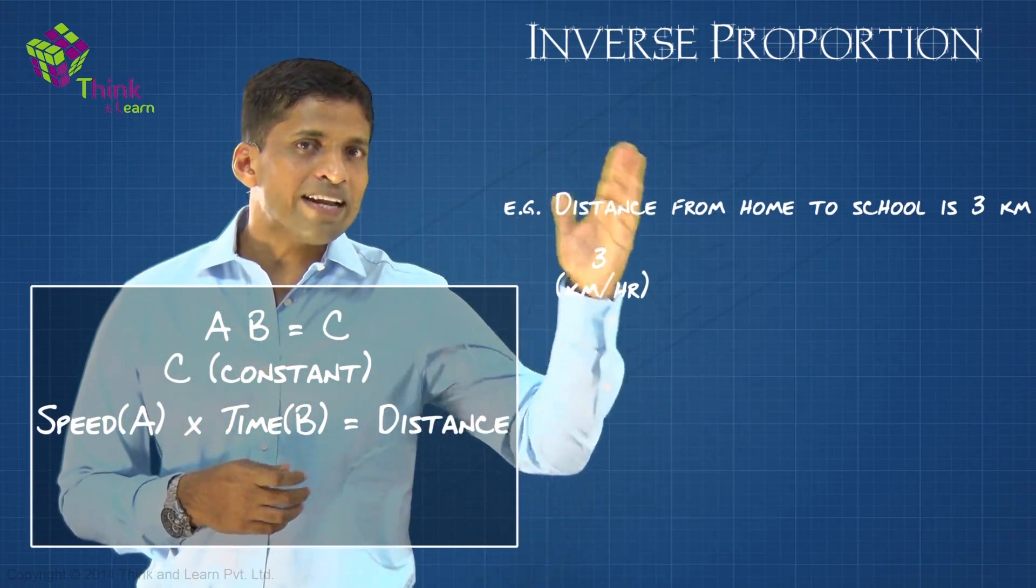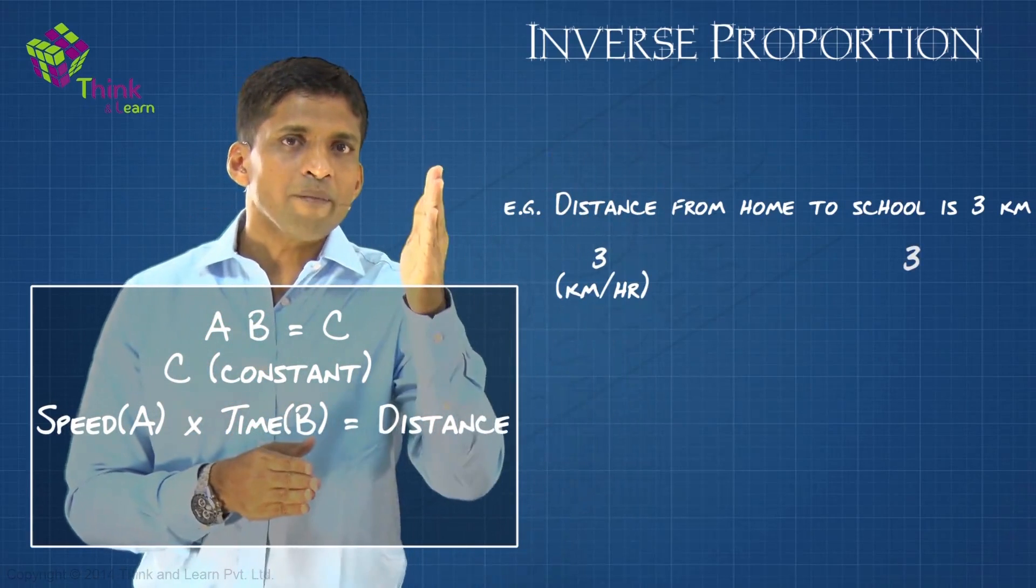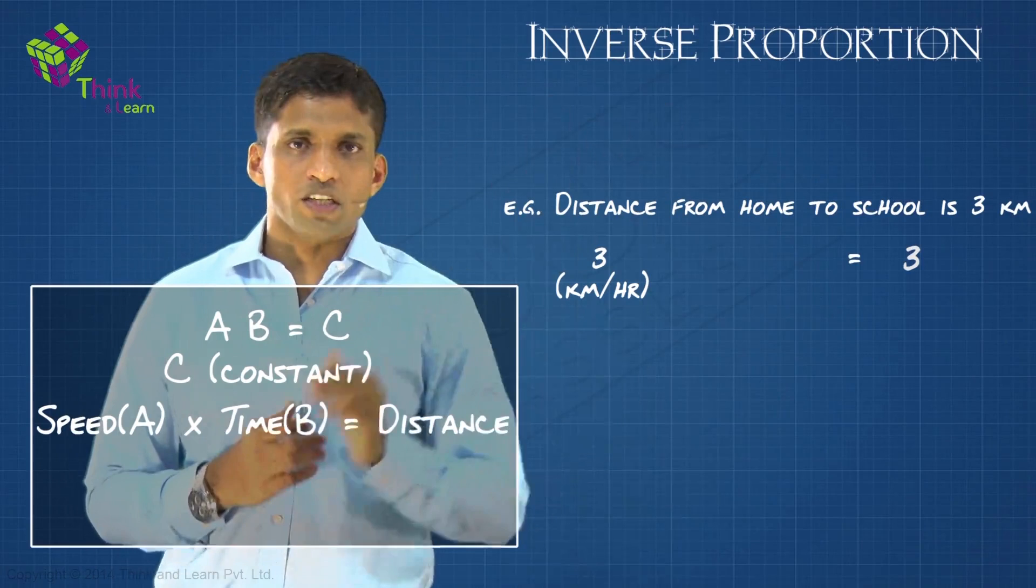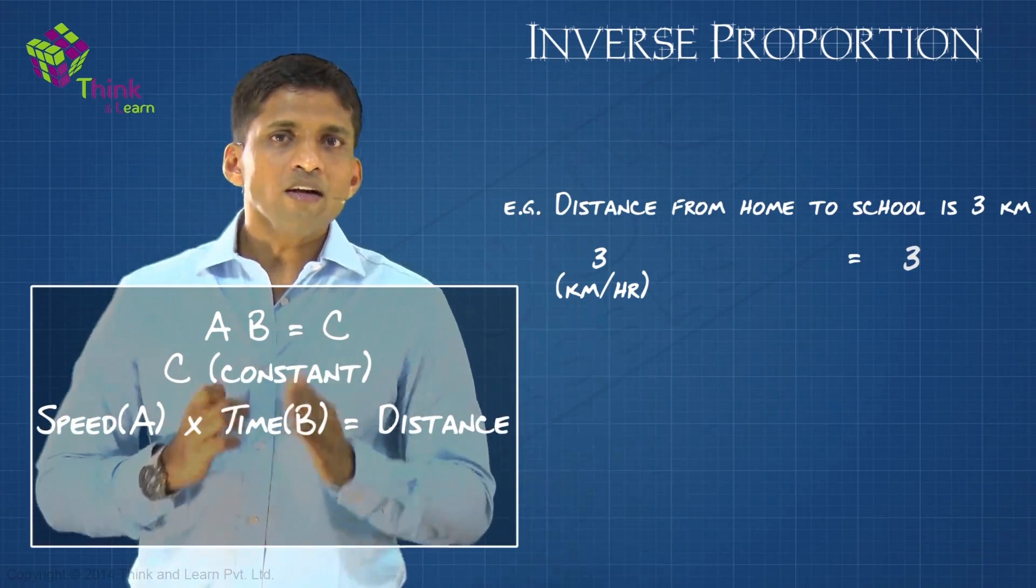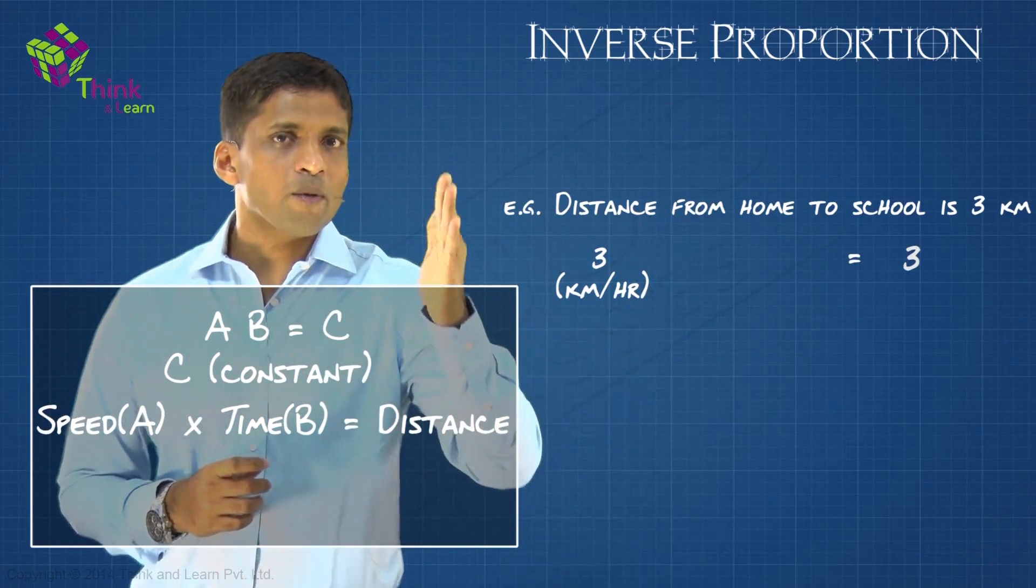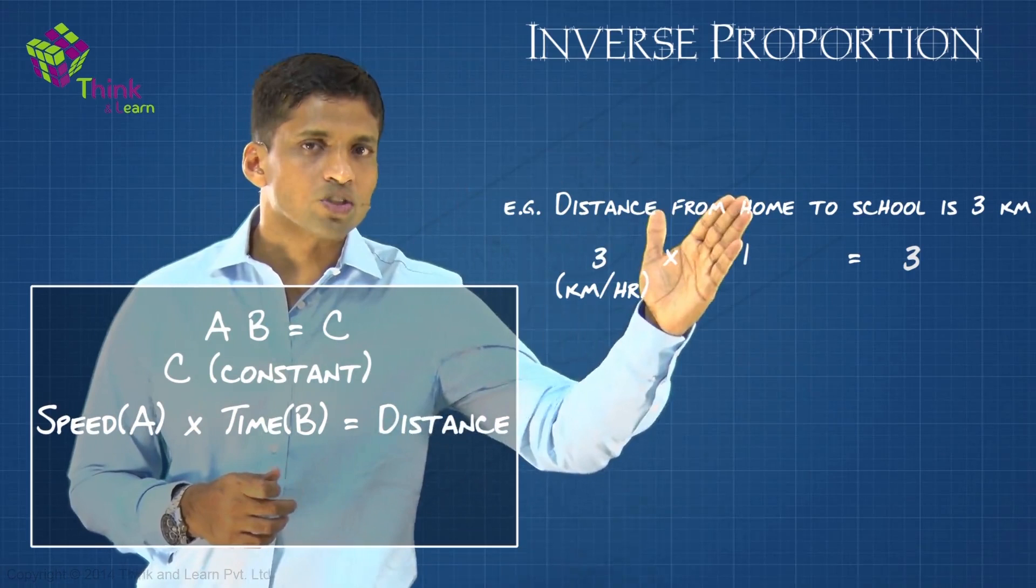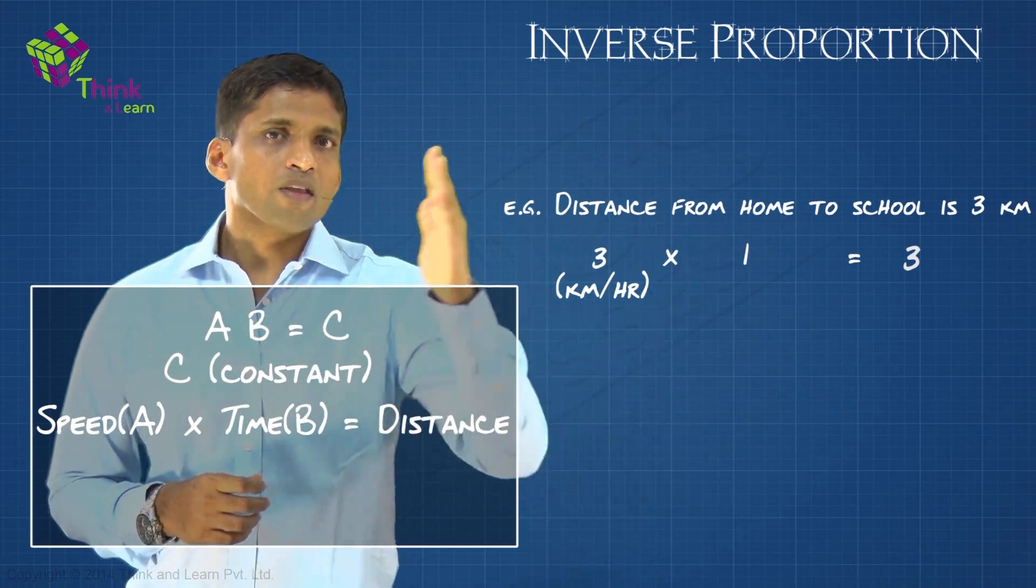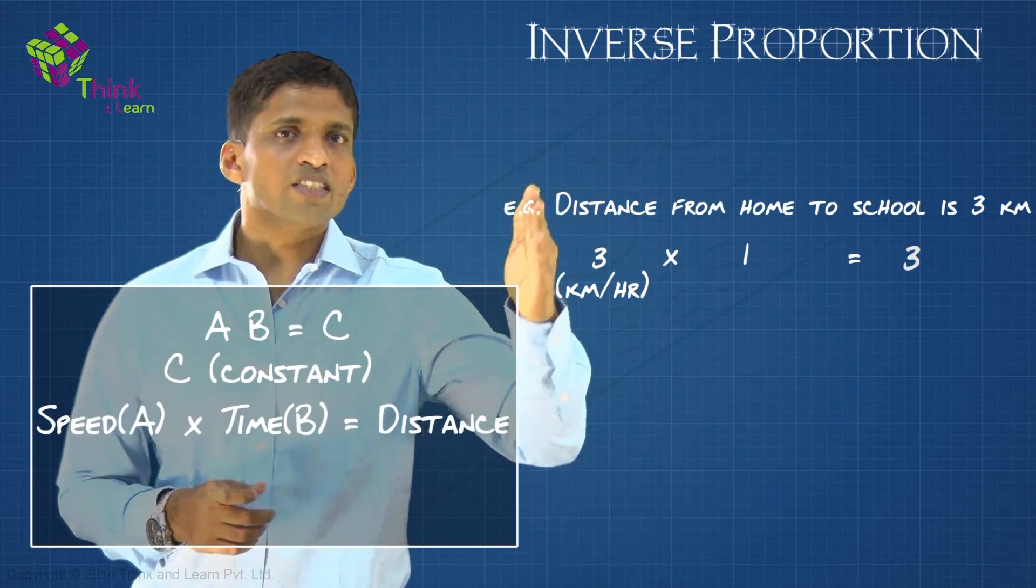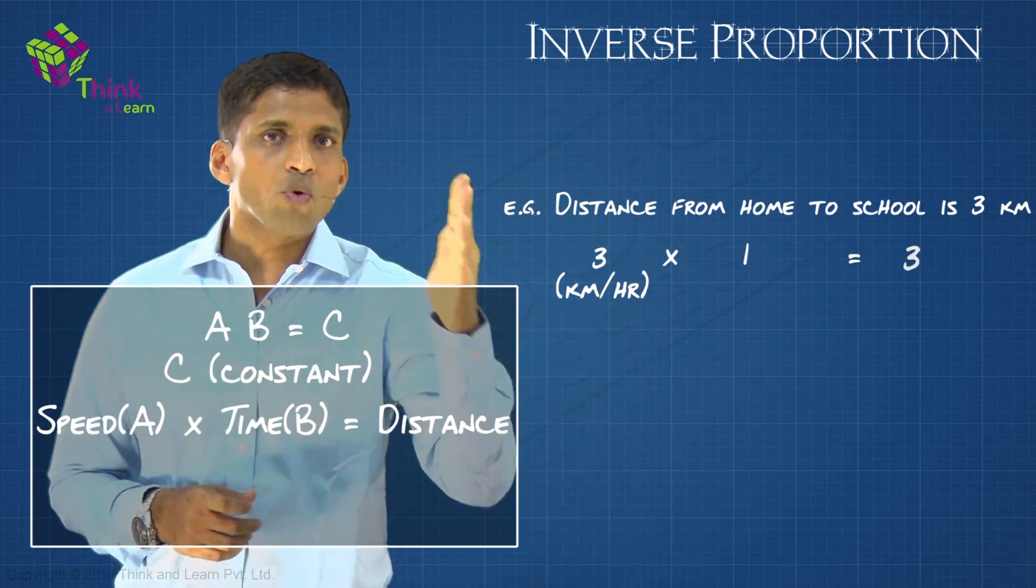To complete, the right hand side is already fixed at 3. Speed into time equals distance. Assume that you are walking with a speed of 3 kilometers per hour. What will be the time taken? That will be 1. So 3 into 1 equals 3 kilometers. In 1 hour, with a speed of 3 kilometers per hour, distance covered will be 3 kilometers. There is a perfect match here.